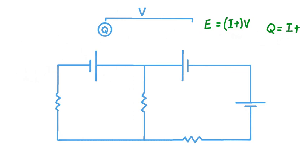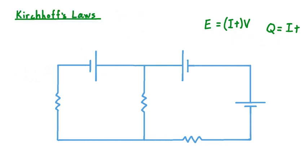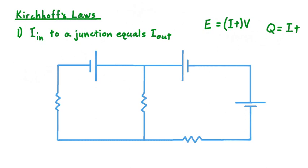Two of these quantities — current and potential difference, or voltage — are each the subject of an energy conservation law for circuits. These laws are known as Kirchhoff's laws, and the first one has to do with current in a circuit. It says that whenever there is a junction in an electrical circuit — that would be where there's a split in a circuit, so there's more than one current path — the total current into the junction must equal the total current out.